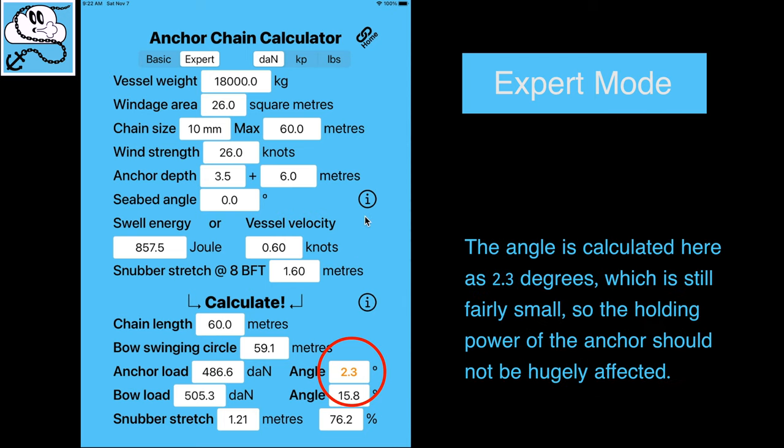The angle is calculated here as 2.3 degrees, which is still fairly small so the holding power of the anchor should not be hugely affected.